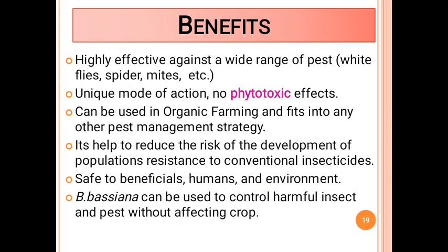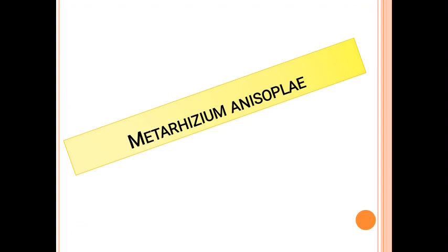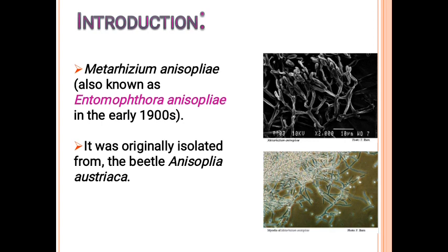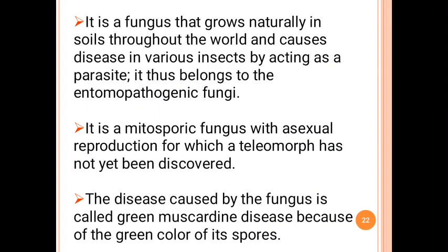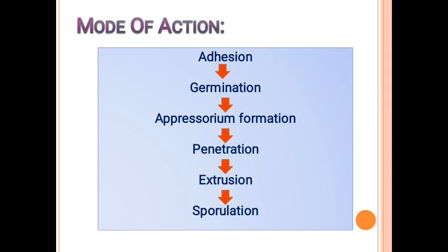The next entomopathogenic fungus is Metarhizium anisopliae. It is also known as Entomophthora anisopliae and was isolated from beetles. This fungus grows naturally and is present everywhere, causing diseases in insects. Because of its green color, it is called green muscardine fungus, and the disease it causes in insects is known as green muscardine disease.